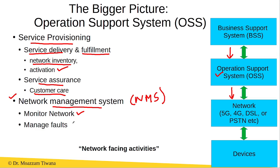If there are any faults either in the network or in the services, those faults are also rectified and managed using the NMS. Here we can see that the OSS directly interacts with the network, so these activities of the OSS system are called the network facing activities.